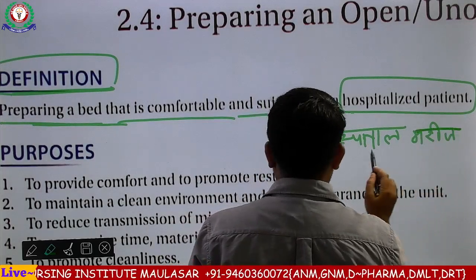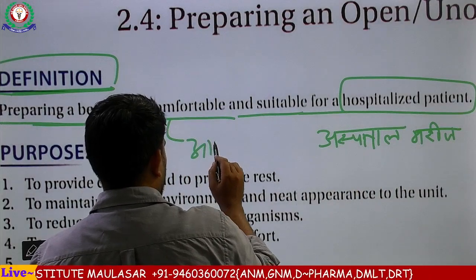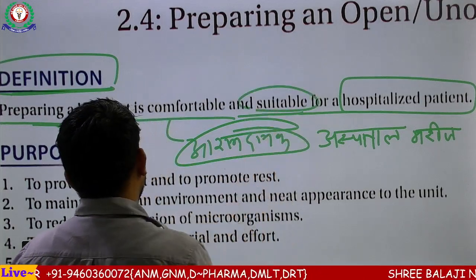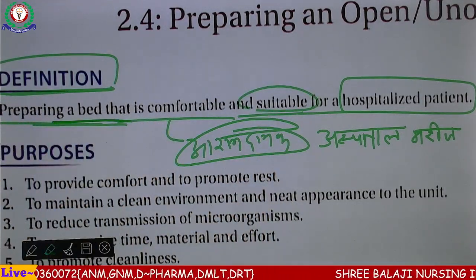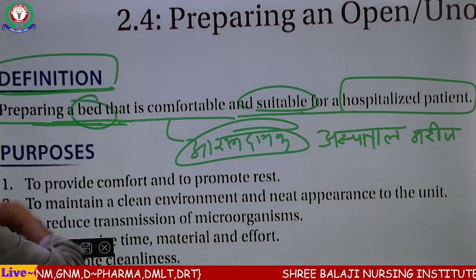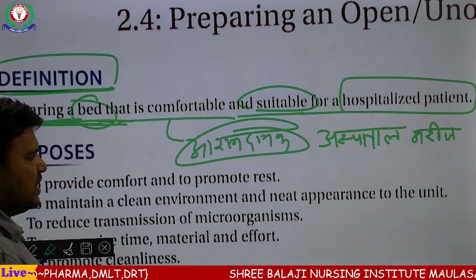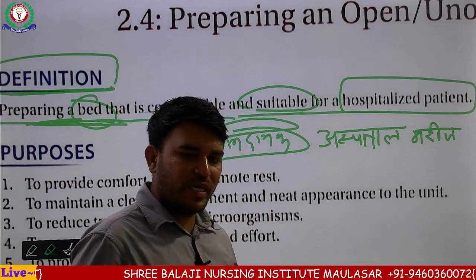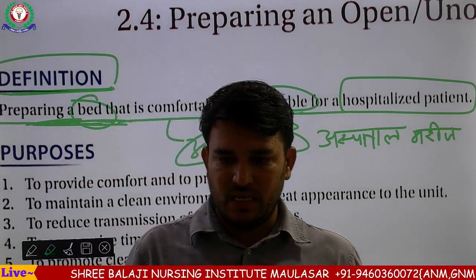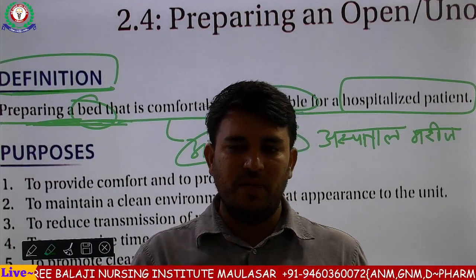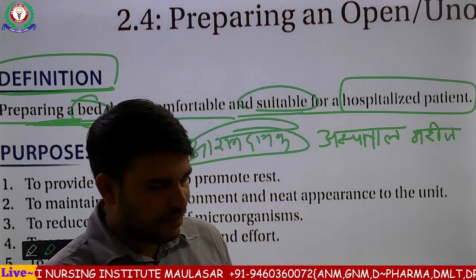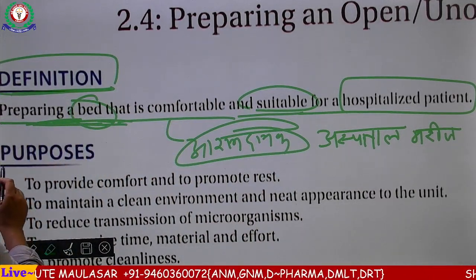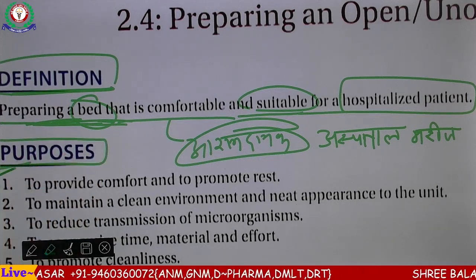उसके लिए आरामदायक हो — comfortable मतलब आरामदायक, suitable bed हो। Preparing a bed — बिस्तर तयार करना — कैसा comfortable और suitable bed तयार करना, यह इसकी definition है। यही इसकी परिभाषा है, उसी को कहते हैं bed prepare करना। इसके बाद में purpose — इसका क्या उद्देशिय है, bed क्यों तयार करते हैं?